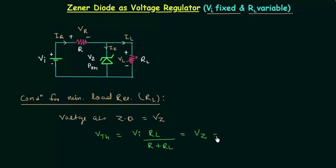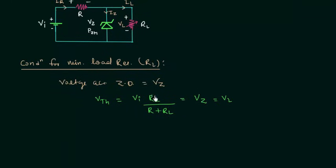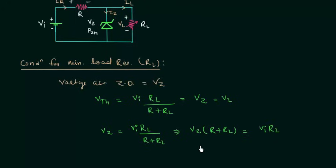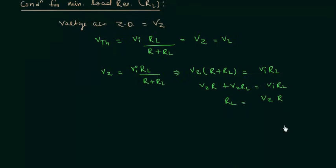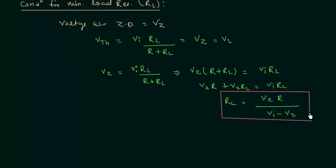So Vz equals VL. We can easily calculate the value of RL, and this will be the minimum value of load resistance. We have Vi multiplied by RL divided by R plus RL equals Vz. Multiplying both sides by R plus RL gives Vz(R + RL) equals Vi·RL. After simplification, RL minimum equals Vz multiplied by R divided by Vi minus Vz. This is the condition for minimum load resistance.